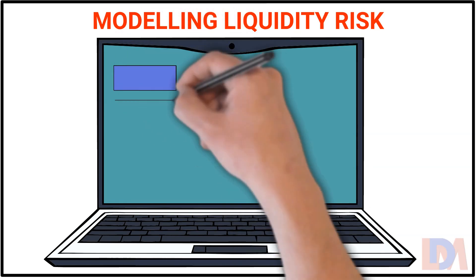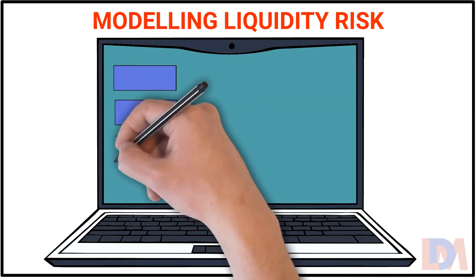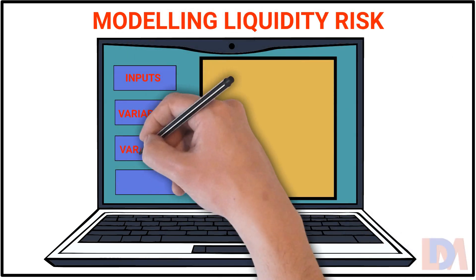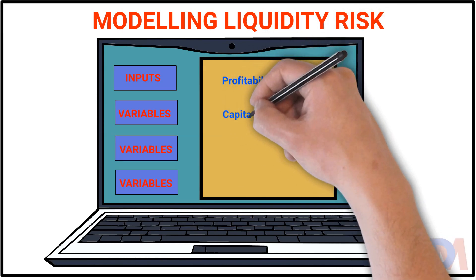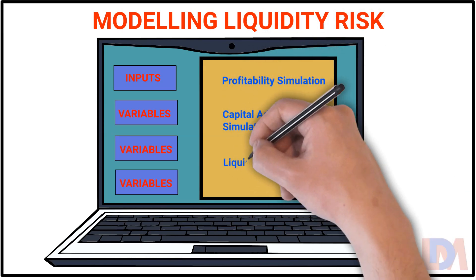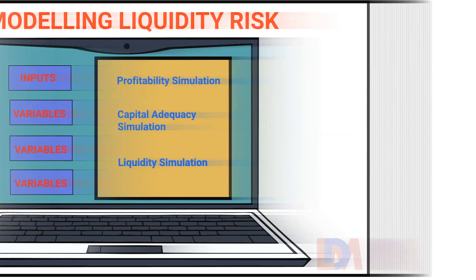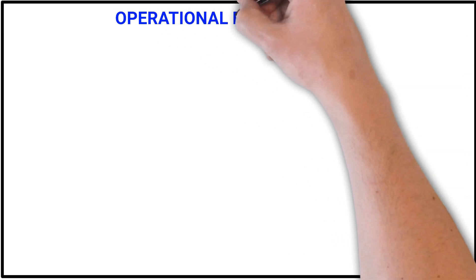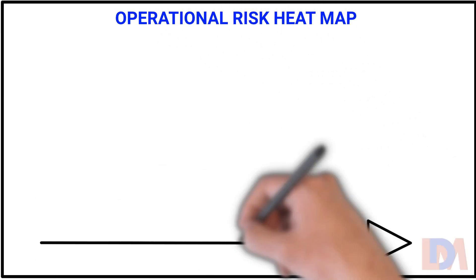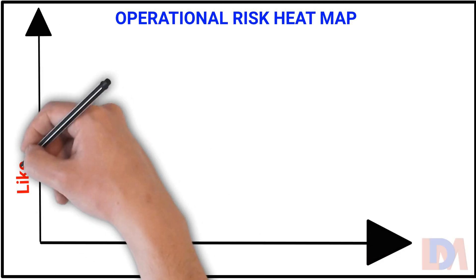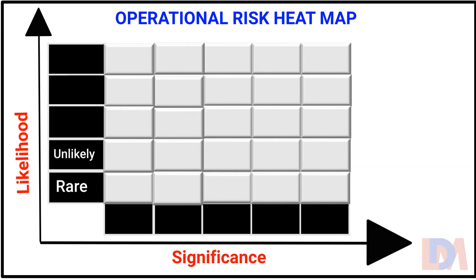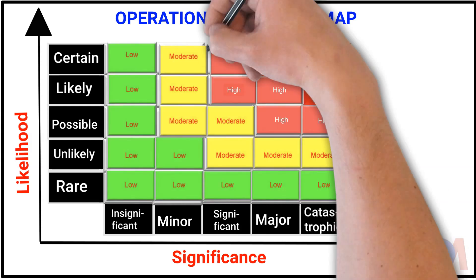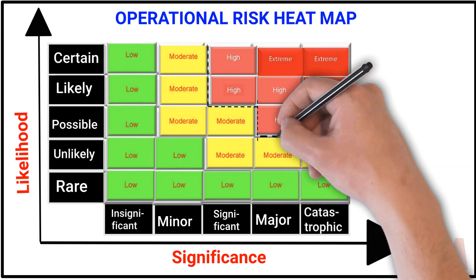To manage liquidity risk, banks create a model to simulate its profitability, capital adequacy, and liquidity positions under different scenarios. Operational risk heat map is an example of a model used by banks and financial institutions to manage operational risk effectively.